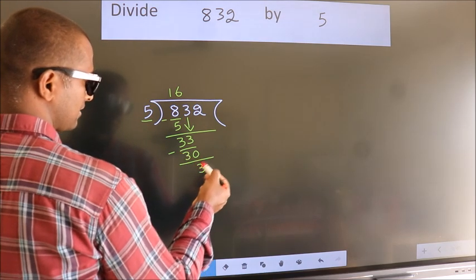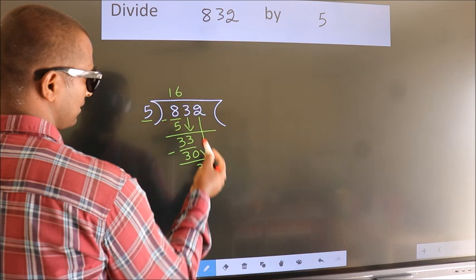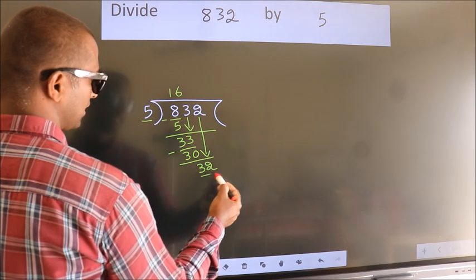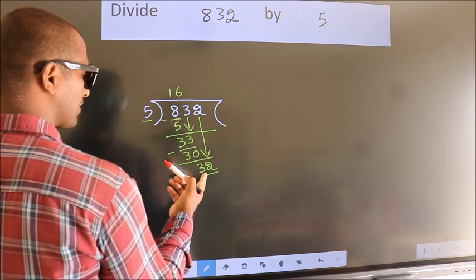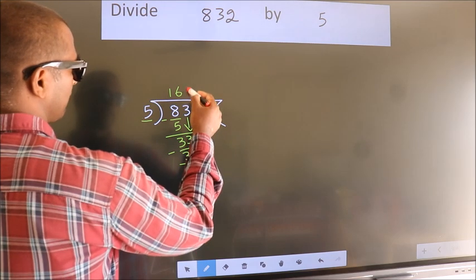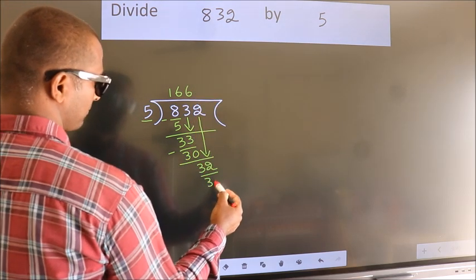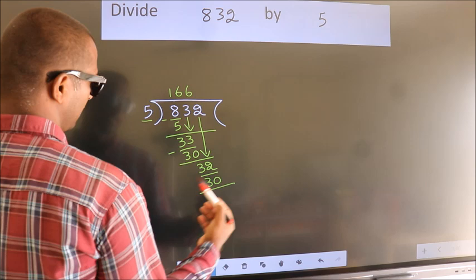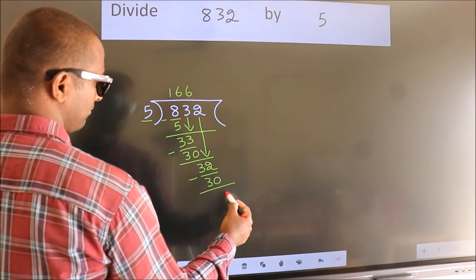After this, bring down the beside number. So bring 2 down to make 32. A number close to 32 in the 5 table is 5 times 6, which is 30. Now we subtract. We get 2.